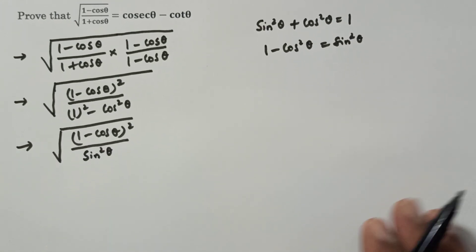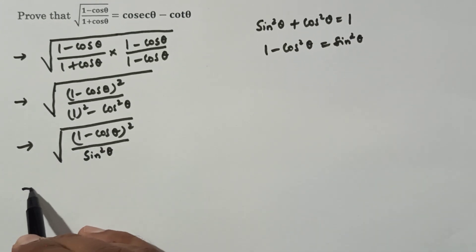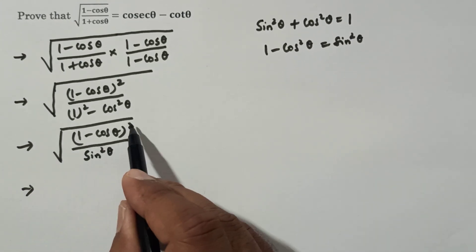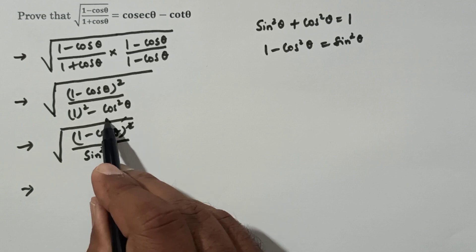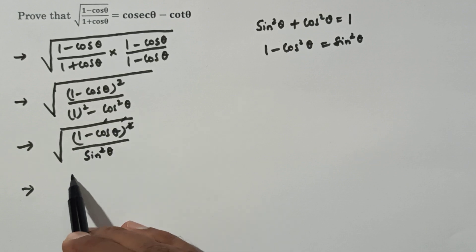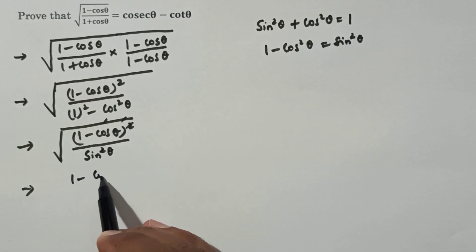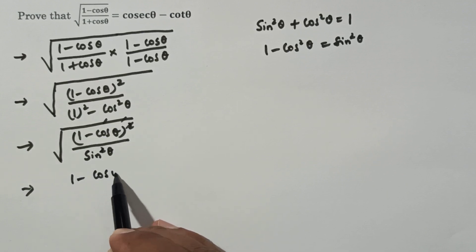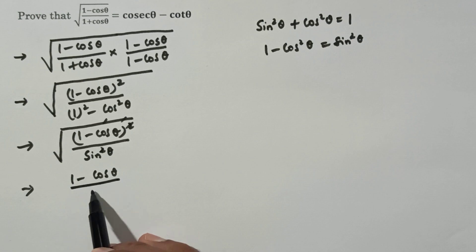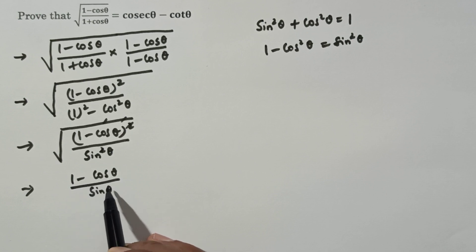Now the square root and the square cancel each other. We are left with (1 - cosθ)/sinθ.